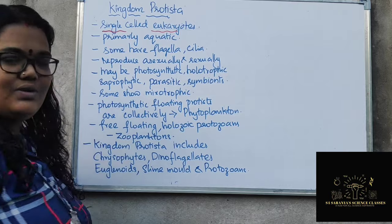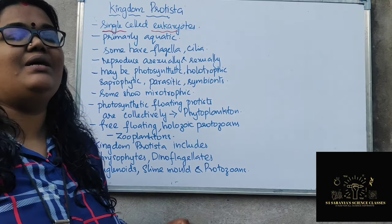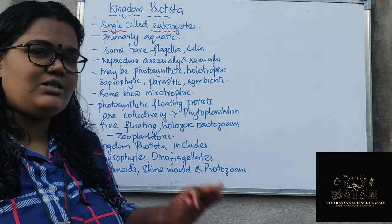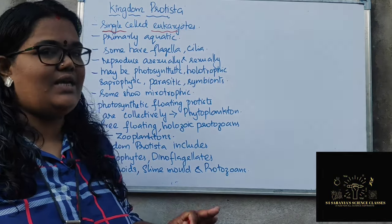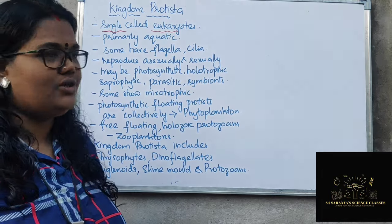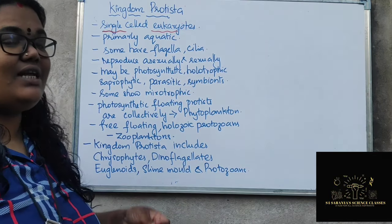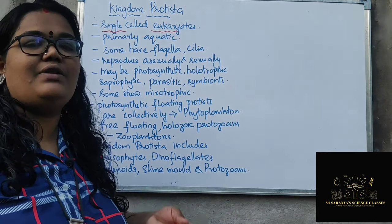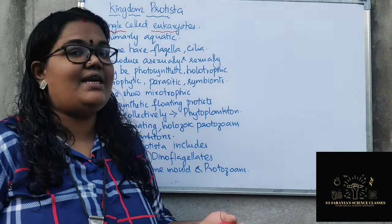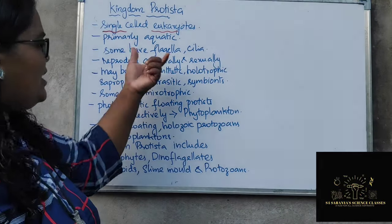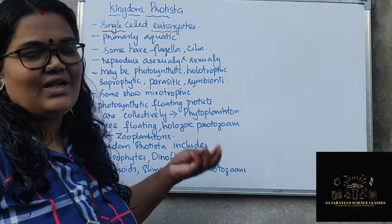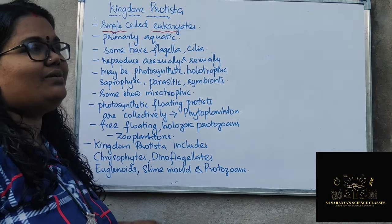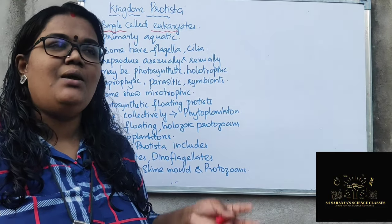Kingdom Protista mainly contains unicellular eukaryotes. Most of them are primarily aquatic in nature — we can say about 99% are aquatic, while very few are found in terrestrial environments. If they are motile, these protists have flagella and cilia, and these structures are also present in Protista.